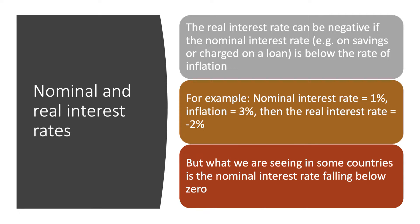It's important to make a distinction between nominal and real interest rates when discussing negative interest rate policy. The real interest rate on savings or loans can be negative if the nominal interest rate — for example on savings — is below the rate of inflation. So if your savings account is paying 1% interest per year but inflation is 3%, the nominal interest rate is positive, but the real interest rate would be minus 2%.